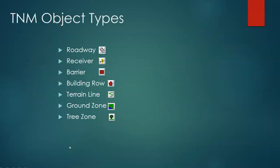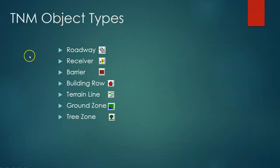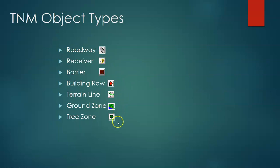Let's look at the types of TNM objects. To build a noise model we're focused on selection and placement of these objects: roadways, receivers, barriers, building rows, terrain lines, ground zones, and tree zones.